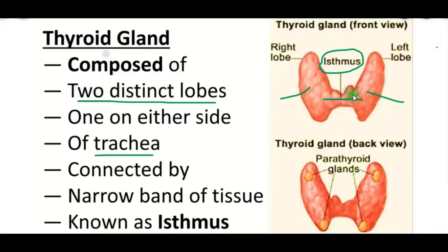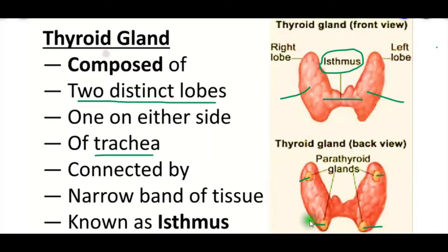Now look at this picture — this is the back view of the thyroid gland. Here four oval-shaped structures are present. Those structures are known as parathyroid glands. We can learn about them later.